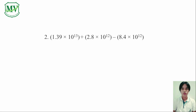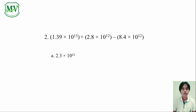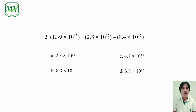Number 2: 1.39 x 10 raised to the power of 13, plus 2.8 x 10 raised to the power of 12, minus 8.4 x 10 raised to the power of 12. A: 2.3 x 10 raised to the power of 13. B: 8.3 x 10 raised to the power of 12. C: 4.8 x 10 raised to the power of 13. And D: 3.8 x 10 raised to the power of 12. Which letter is the correct answer? Let's find out in the solution.